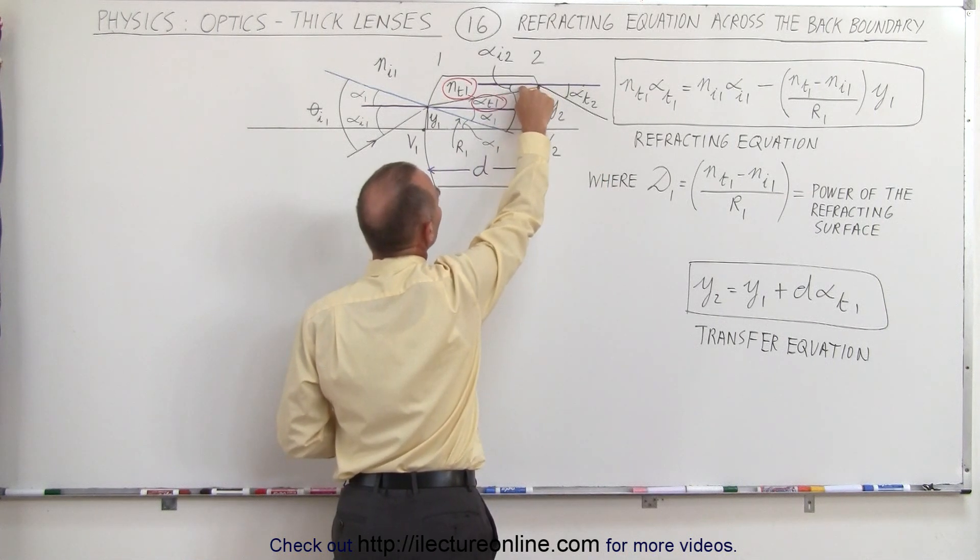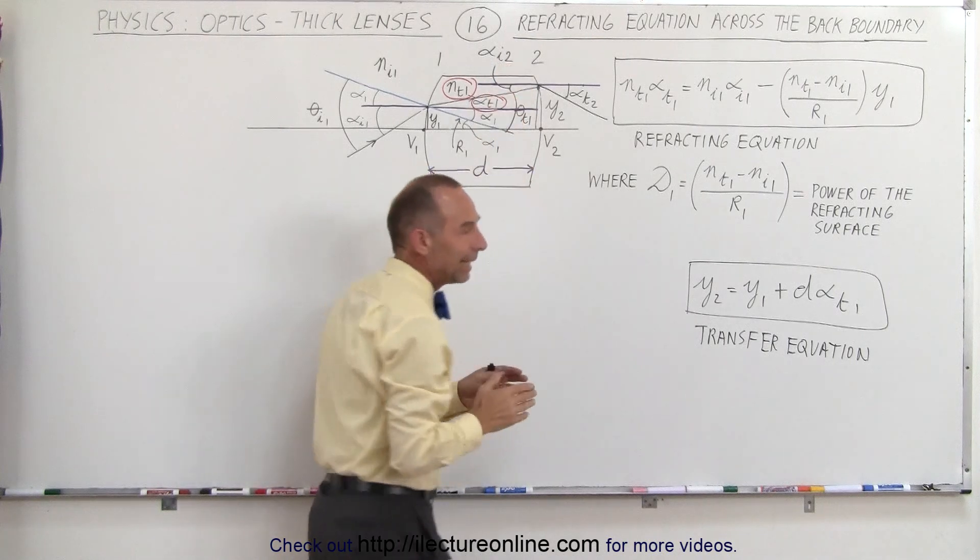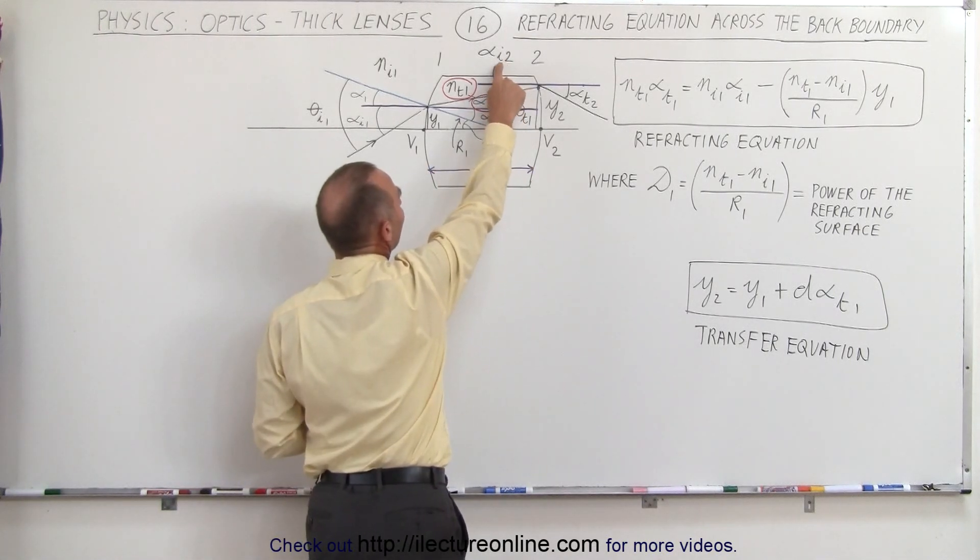Here we have the incident angle relative to the horizontal line. We'll call that alpha I2. It's incident to the boundary but it's boundary number two, so we call it I2.